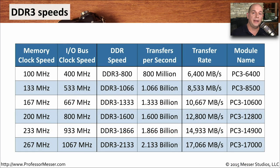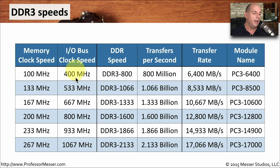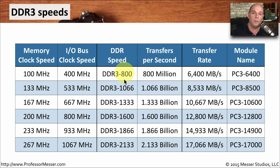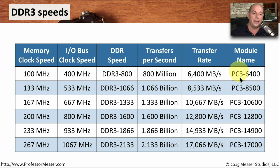With DDR3, everything is moving twice as fast as DDR2. We might still have the same 100 megahertz memory clock speed, but now the I/O bus needs to be 400 megahertz, because we have doubled that over DDR2. Since it's DDR, we are now transferring 800 million transfers per second using that 100 megahertz memory clock speed, and we describe this as DDR3-800. Multiply by 8, and we get the total transfer rate in megabytes per second — for DDR3-800, multiplied by 8, gives us a module name of PC3-6400.